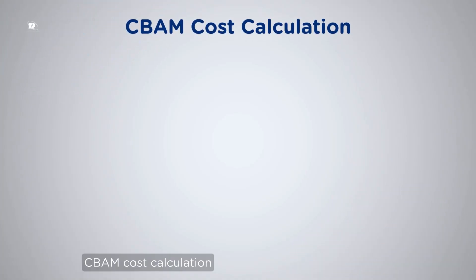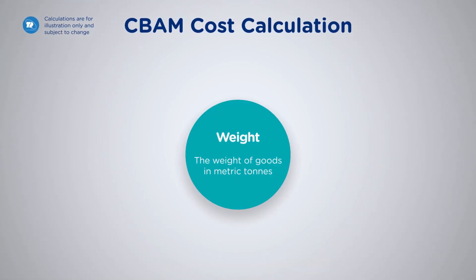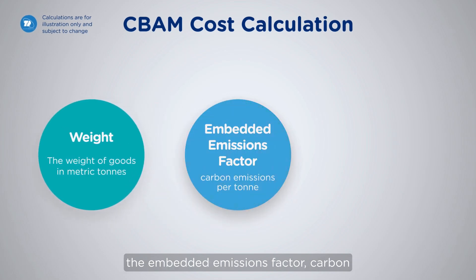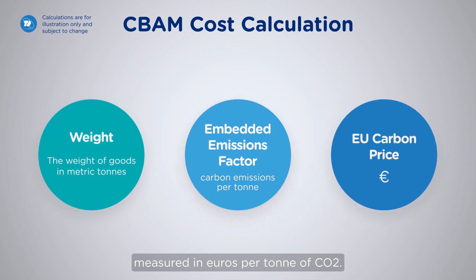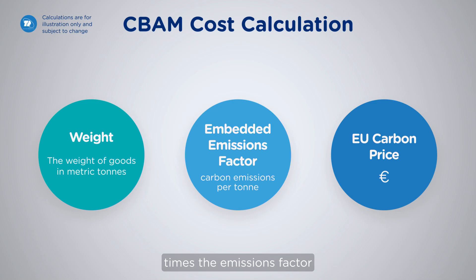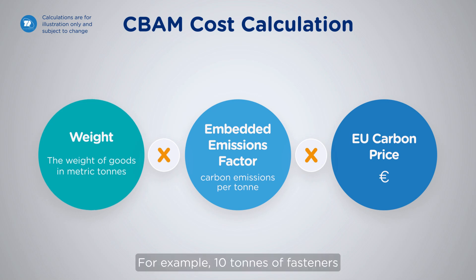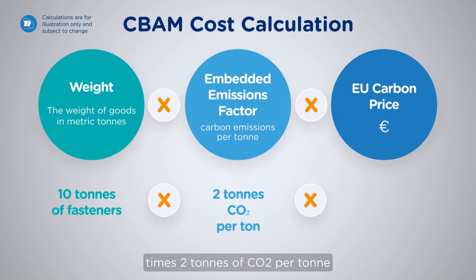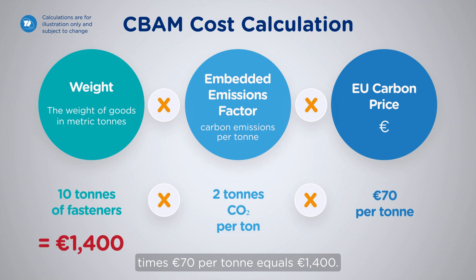CBAM cost calculation depends on three main factors: the weight of the goods in metric tons, the embedded emissions factor (carbon emissions per ton), and the EU carbon price, measured in euros per ton of CO2. The basic formula is: weight × emissions factor × EU carbon price. For example, 10 tons of fasteners × 2 tons of CO2 per ton × 70 euros per ton equals 1,400 euros.